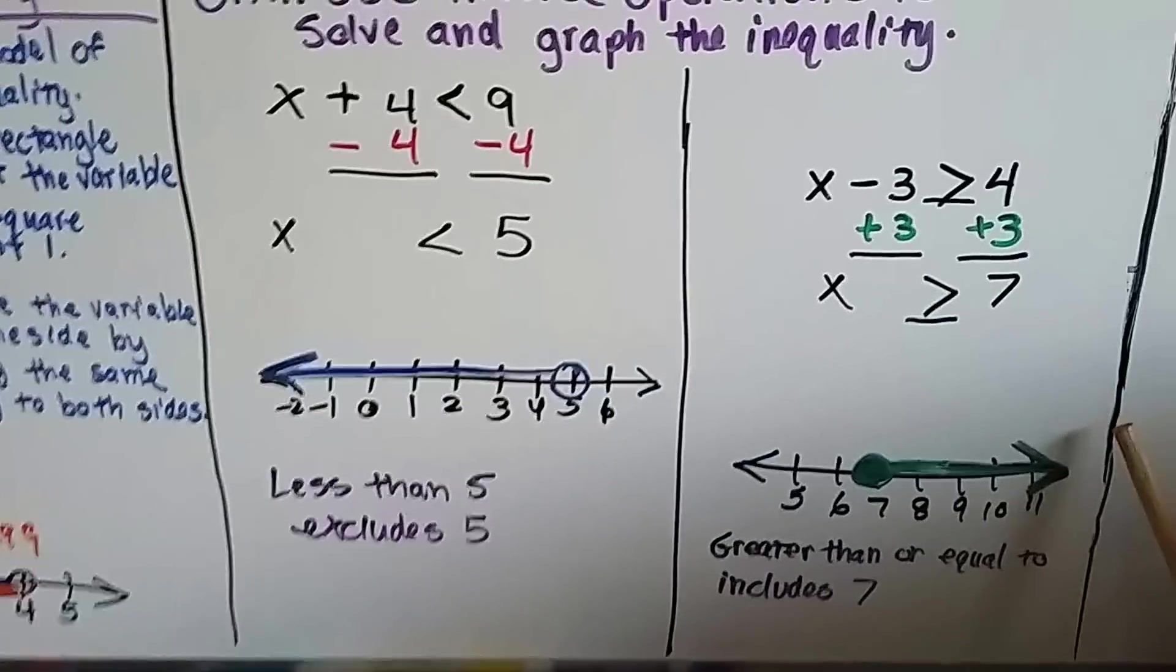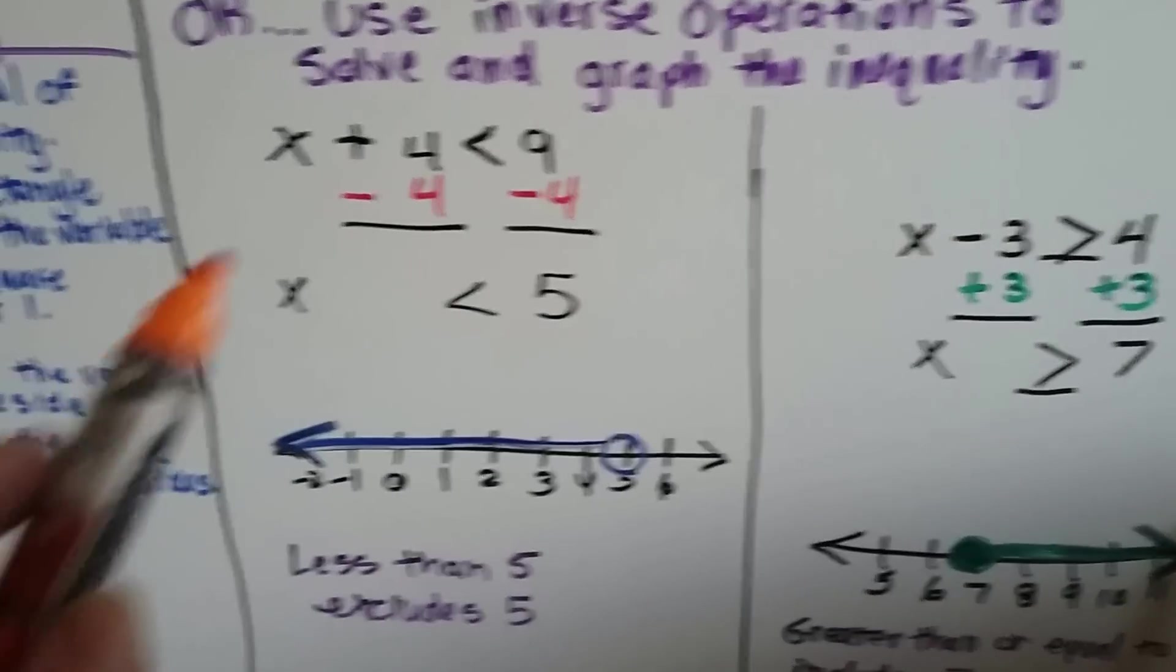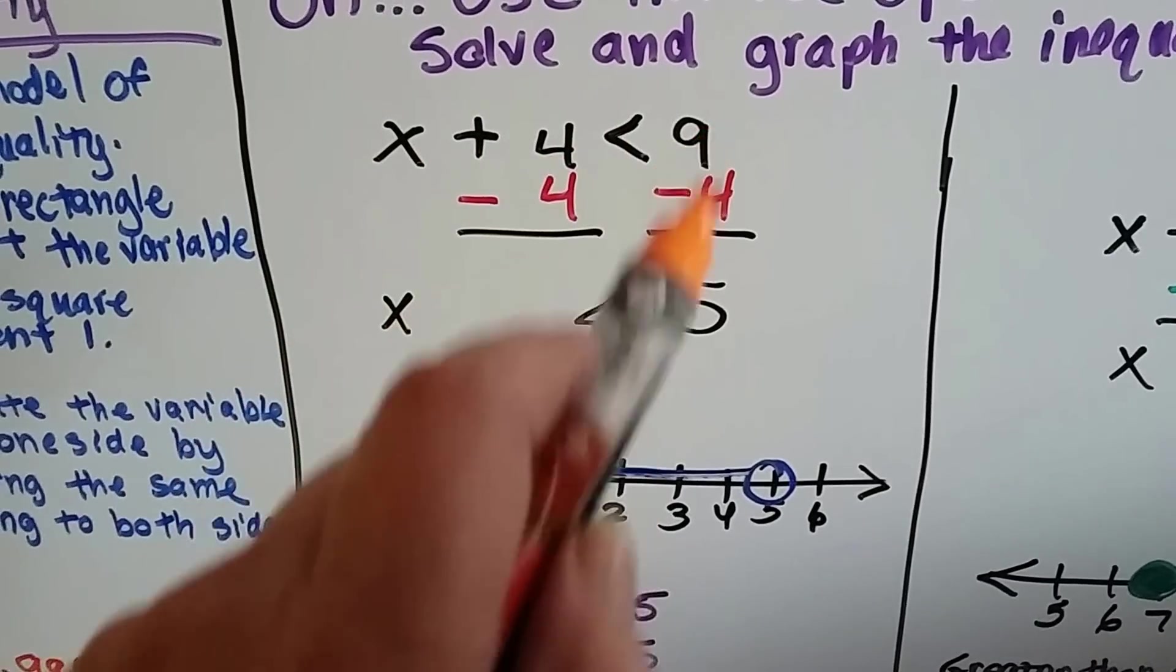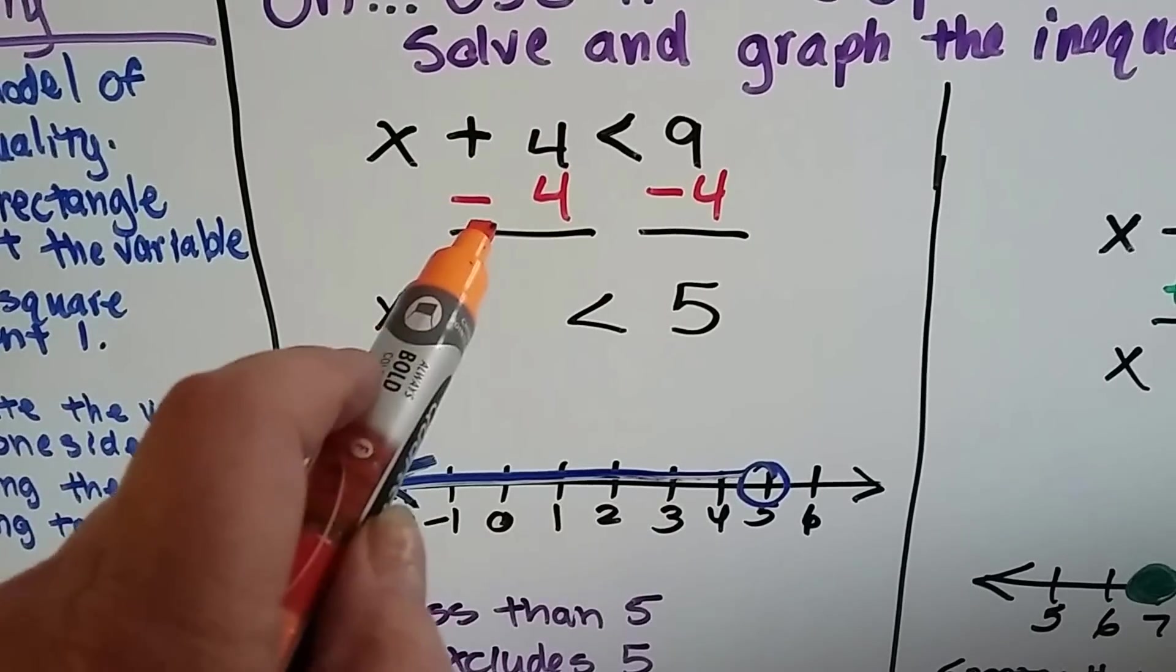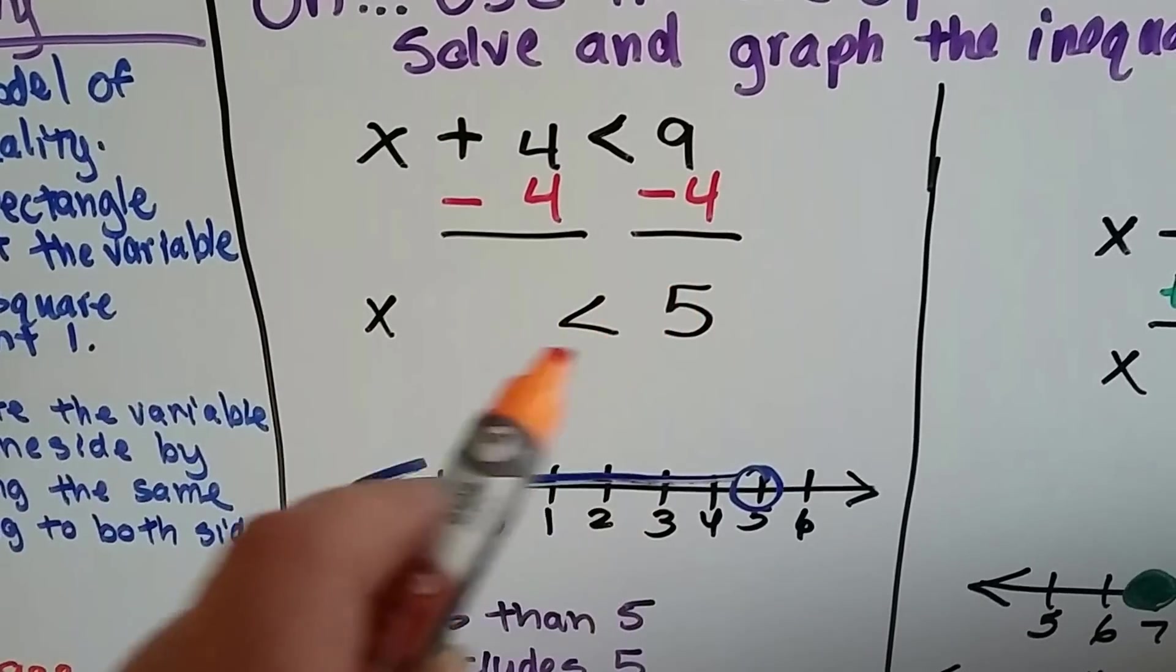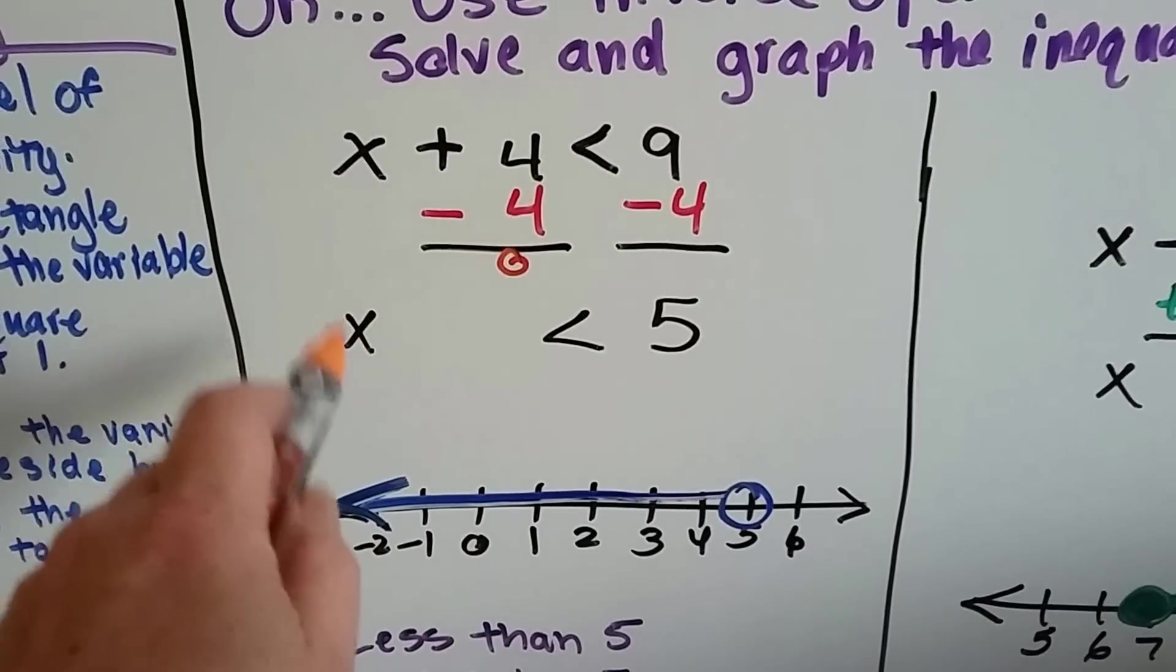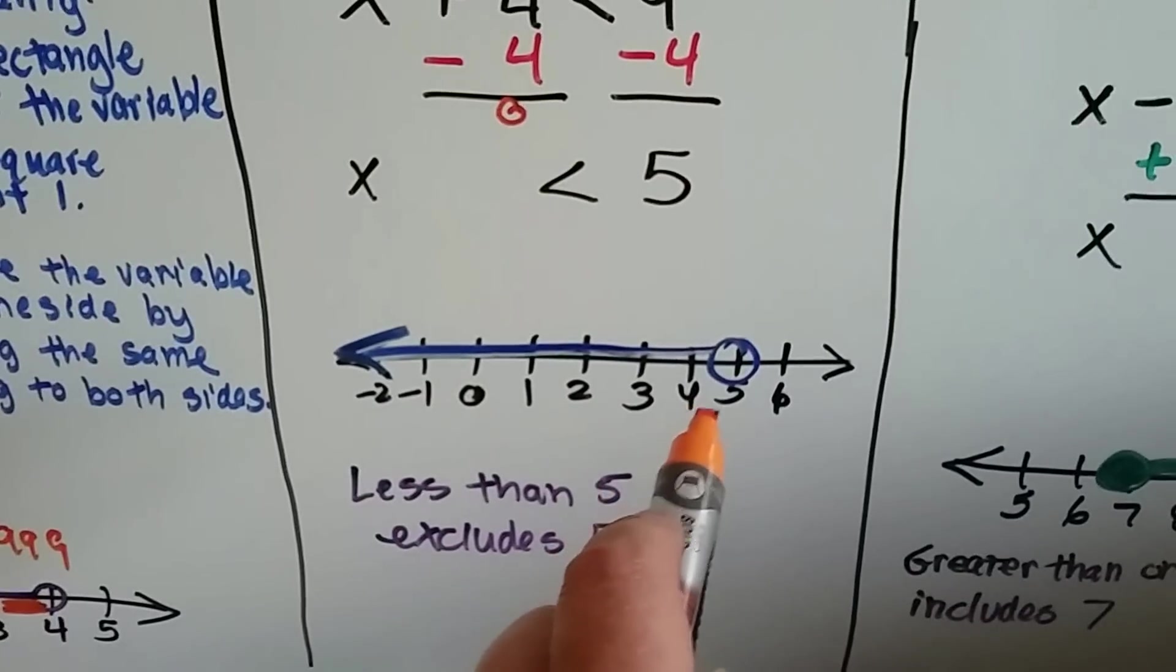We can also just do math and use the inverse operation to solve and graph the inequality. So for this one, I've got x plus 4 is less than 9. So this said plus 4, so I minused 4 from each side. Minus 4, minus 4. That gave me x, because this is 0. That gave me x is less than 5.